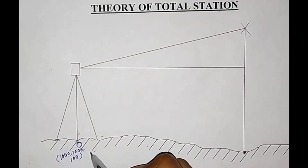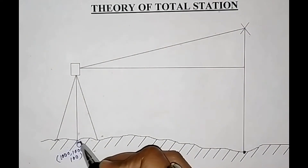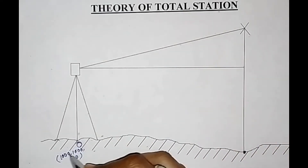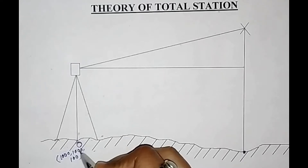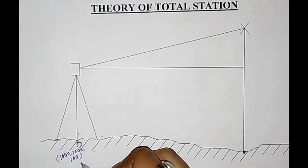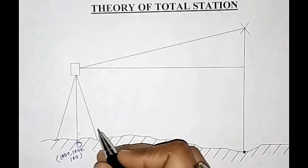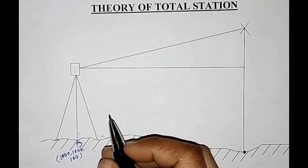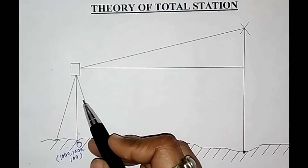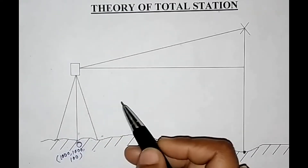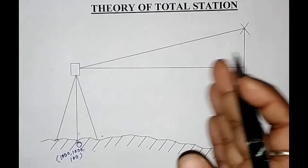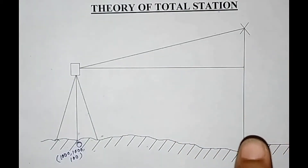So when we place a total station at a point of known coordinate — here I am assuming the coordinate of this point is 1000, 1000 and the elevation is 100 — we first have to do leveling, centering, and orientation. After that, total station can do the further work.